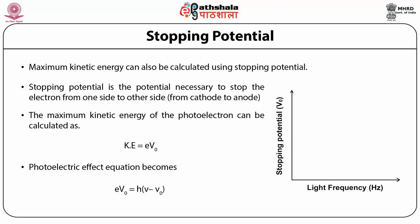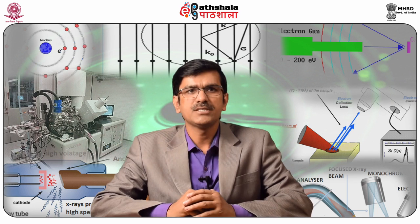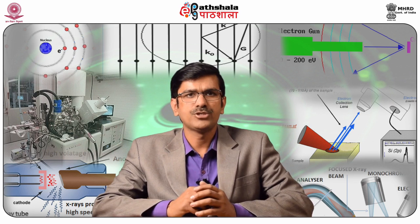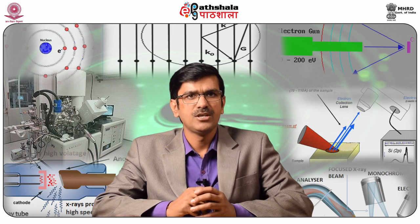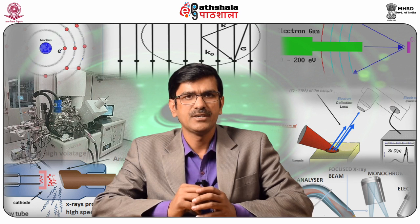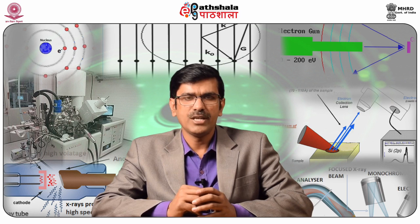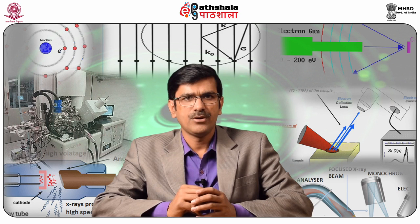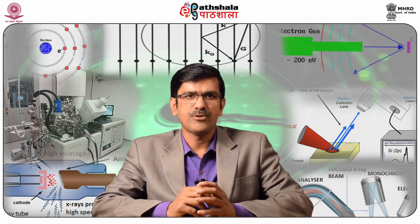X-ray photoelectron spectroscopy (XPS) is a surface analytical technique used to investigate the chemical composition of sample surfaces. It provides wide information about the chemical structure, catalyst composition, and dispersion, based on the binding energy of core electrons. XPS is also known as Electron Spectroscopy for Chemical Analysis (ESCA), an abbreviation introduced by Kai Shengban's research group to emphasize the chemical information the technique provides.